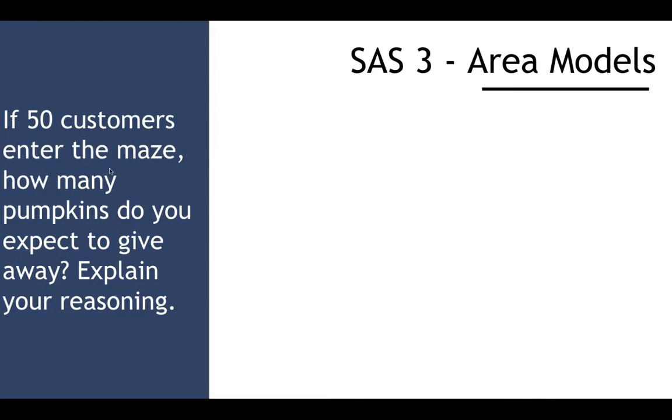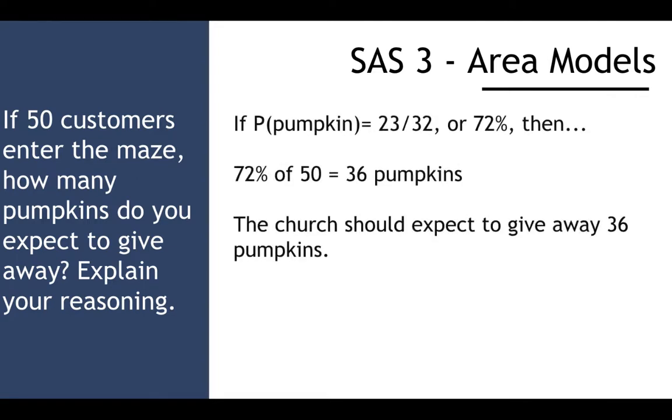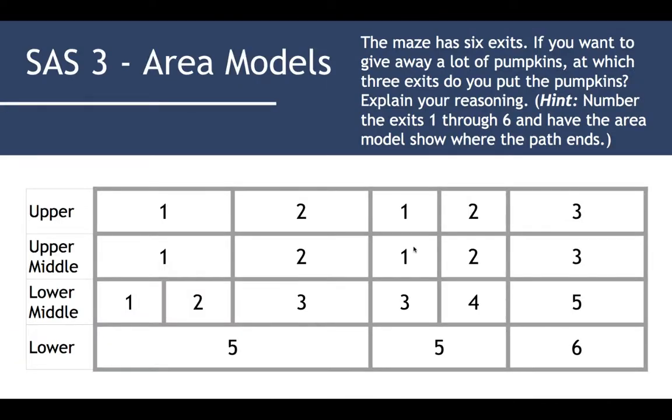If 50 customers enter the maze, how many pumpkins do you expect to give away and explain your reason? Well, if you have 50 customers come in and we know the probability of getting a pumpkin, we simply multiply the number of customers by the probability fraction. So if pumpkin is 23 out of 32, or 72%, what's 72% of 50? 36 pumpkins will be given away.